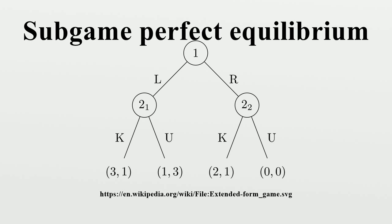Reinhard Selten proved that any game which can be broken into sub-games containing a subset of all the available choices in the main game will have a sub-game perfect Nash equilibrium strategy. Sub-game perfection is only used with games of complete information, though it can be used with extensive form games of complete but imperfect information. The sub-game perfect Nash equilibrium is normally deduced by backward induction from the various ultimate outcomes of the game, eliminating branches which would involve any player making a move that is not credible from that node.